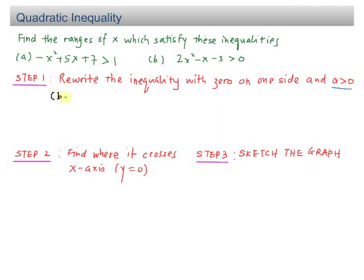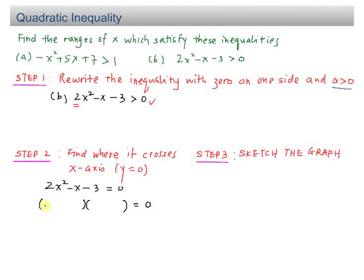For part B, we have 2x squared minus x minus 3 more than 0. The 0 is already on one side and the coefficient A is positive 2, so step 1 is complete. For step 2, set 2x squared minus x minus 3 equal to 0 and factorize: (2x)(x) gives 2x squared, and (3)(1) gives 3. The cross-multiplication gives negative 3x plus 2x, which equals negative x — correct.